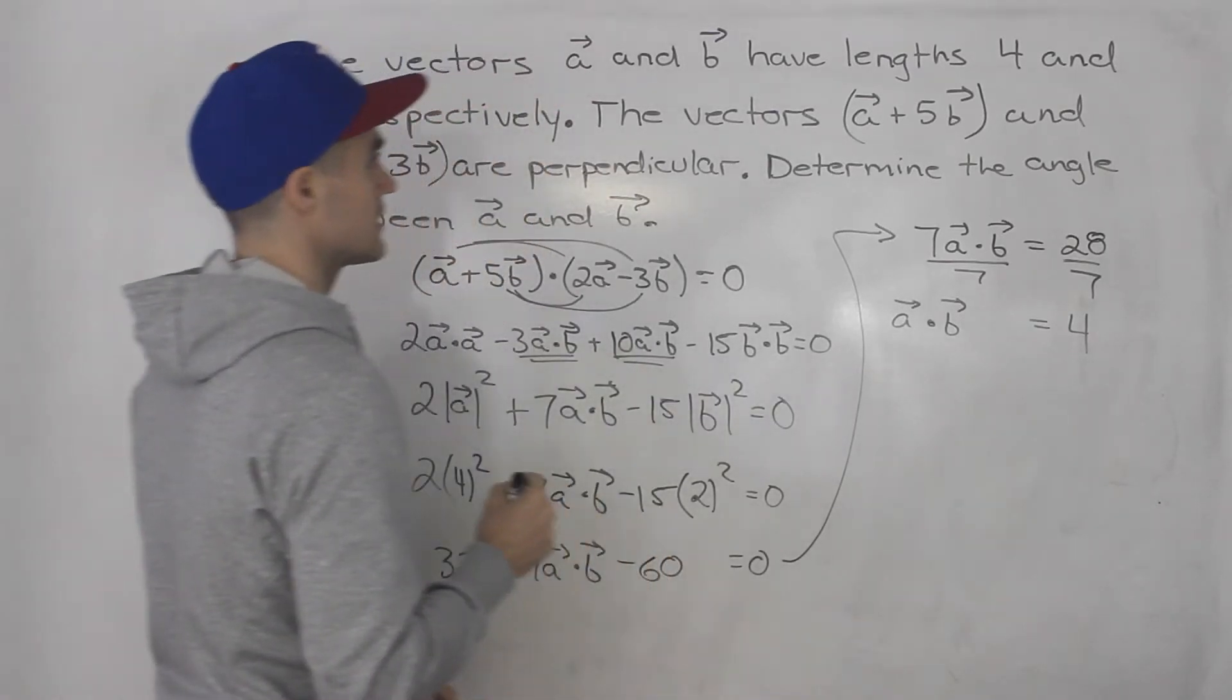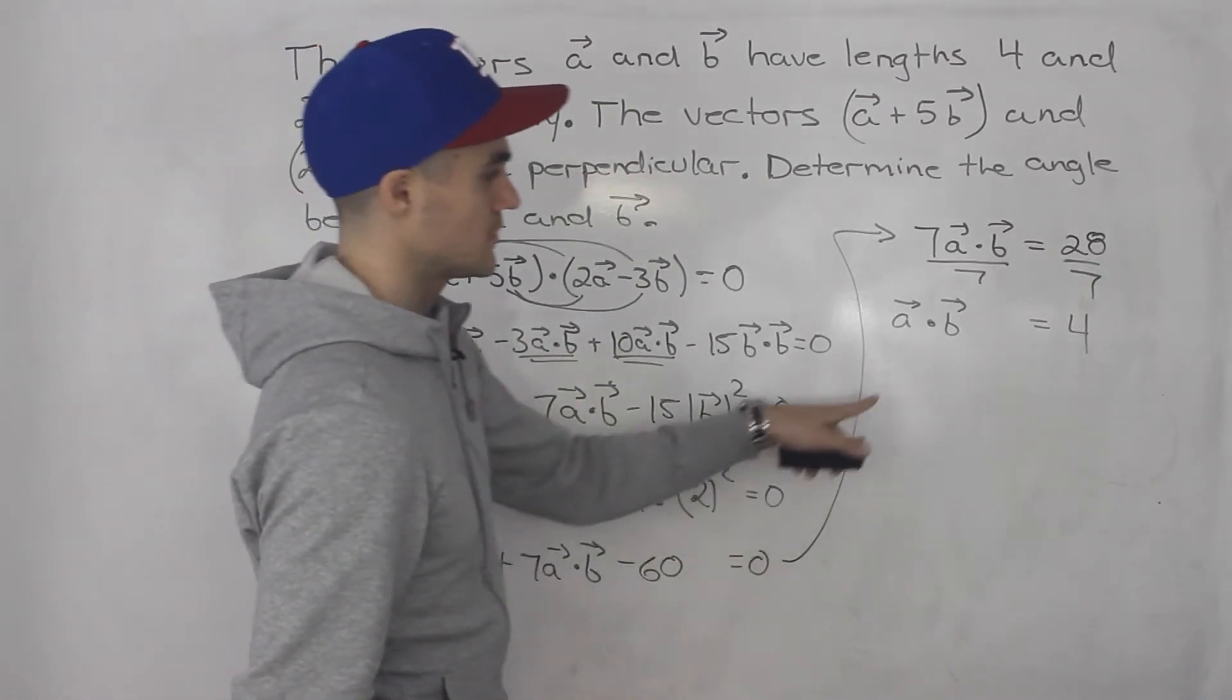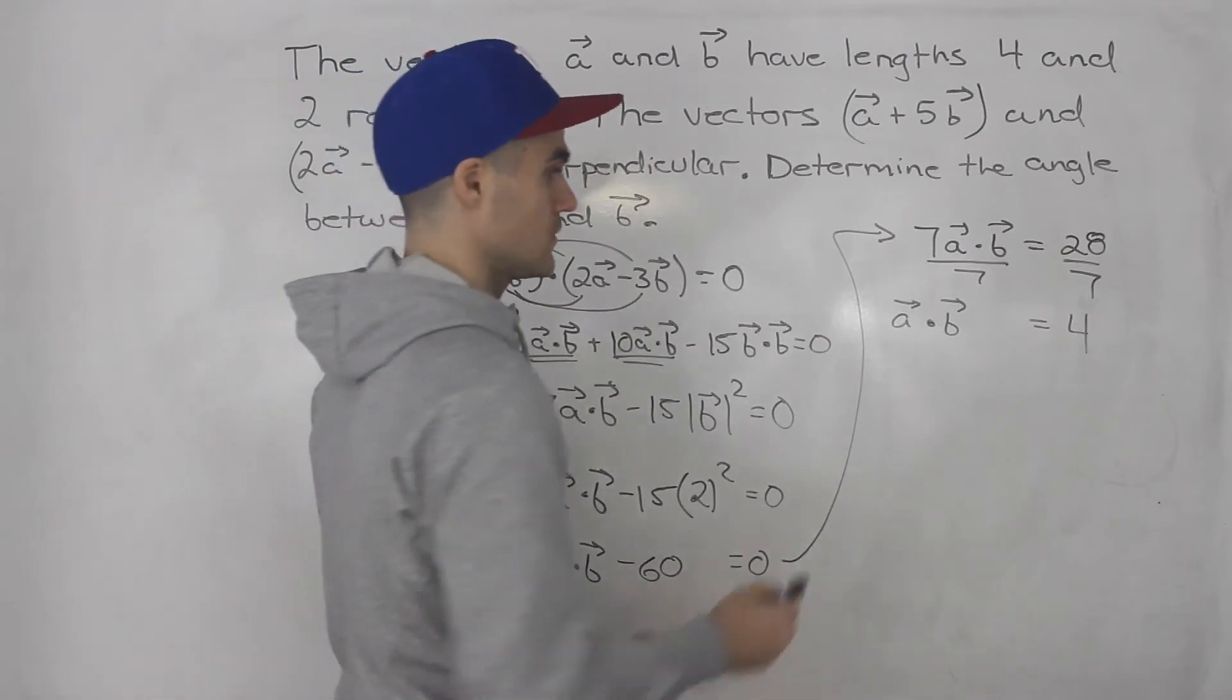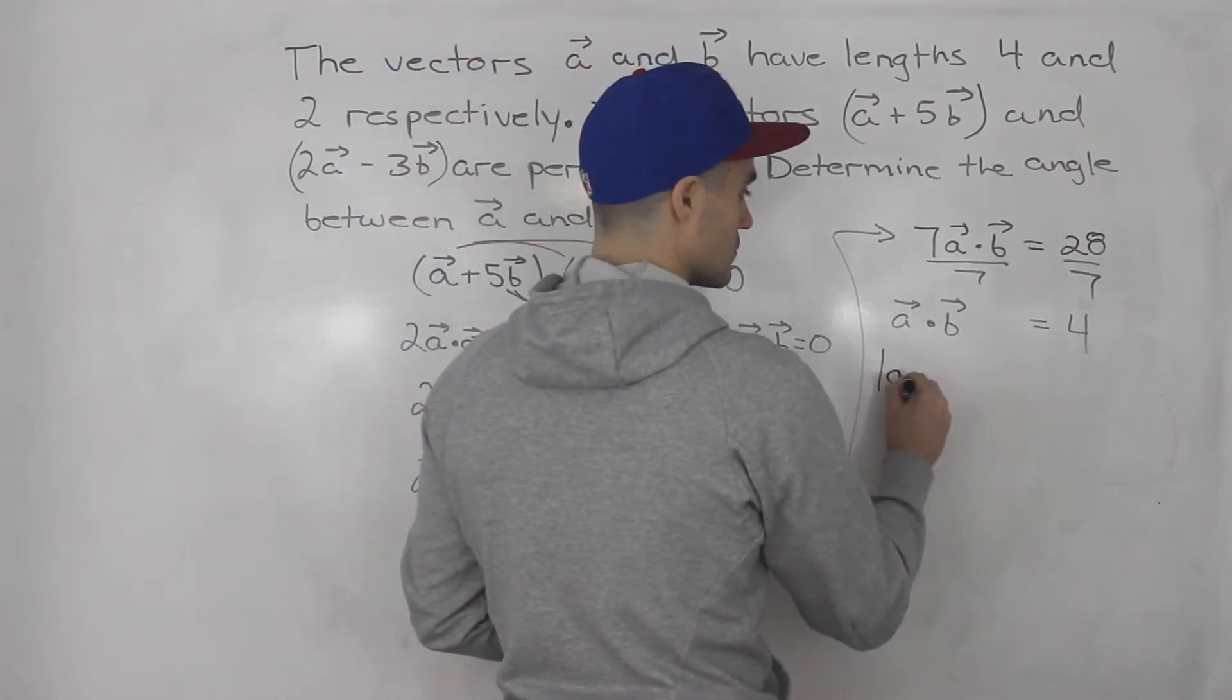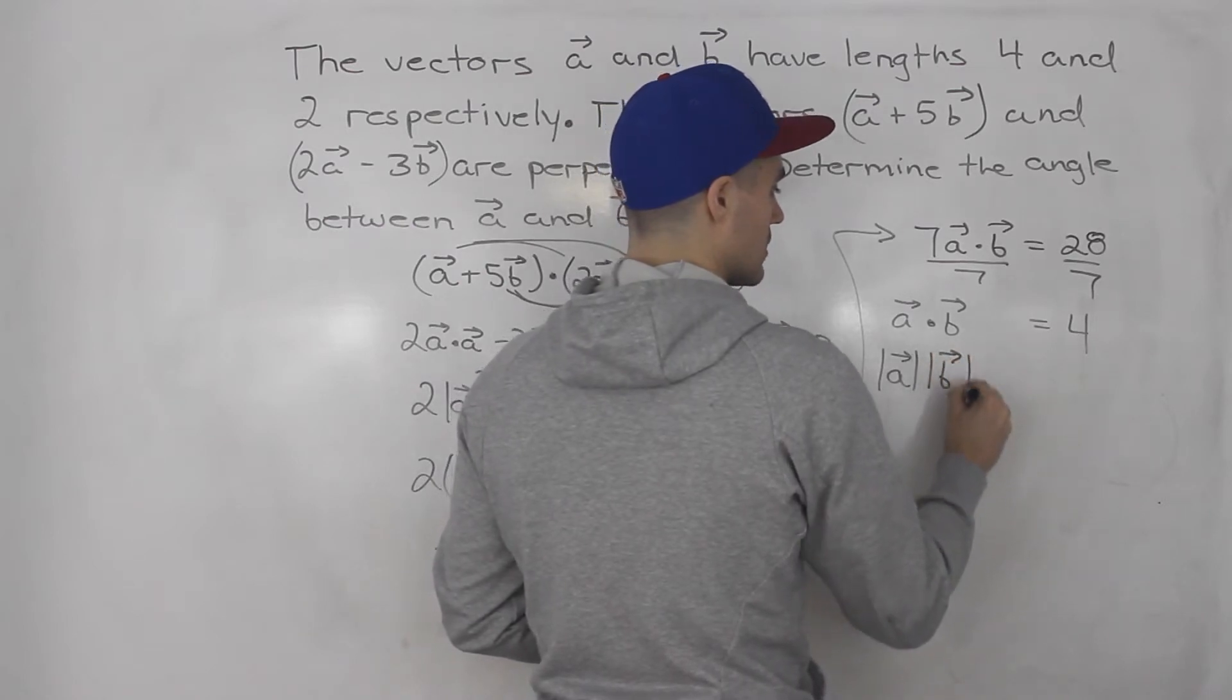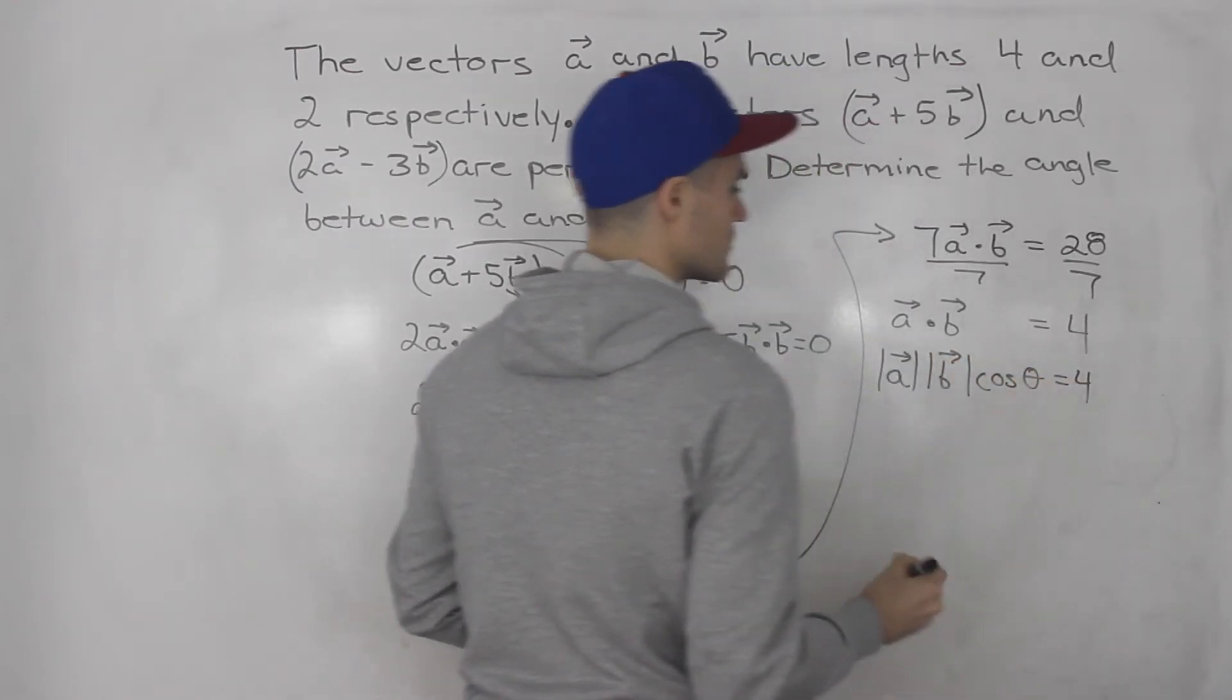But notice here they're asking the angle between a and b. Well since we know the dot product between a and b is 4, we got the magnitudes of a and b, we can just plug it in to that dot product formula. So magnitude of a times magnitude of b times cos θ is equal to 4.